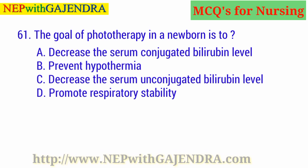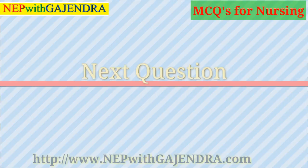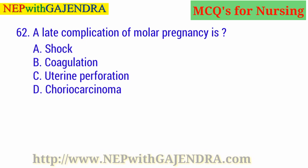The goal of phototherapy in a newborn is to: A. Decrease the serum unconjugated bilirubin level. B. Prevent hypothermia. C. Decrease the serum conjugated bilirubin level. D. Promote respiratory stability. The right answer is C: Decrease the serum unconjugated bilirubin level.